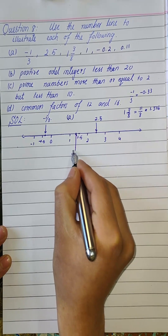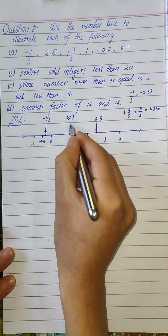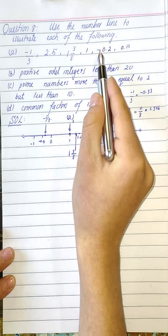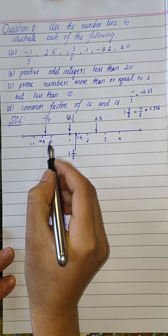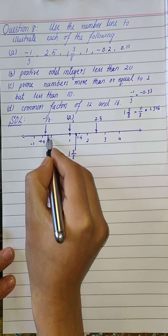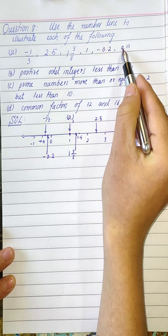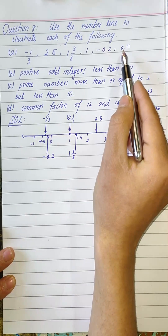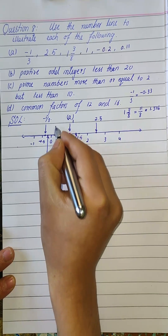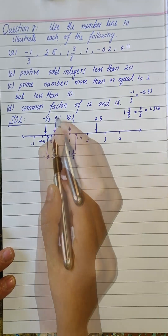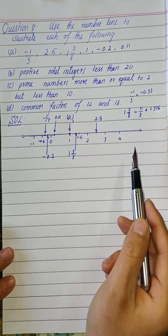1.375 will be around here because 1.5 is the midpoint and 1.375 is close to 1.5, so this point represents 1 and 3 over 8. Then we have 1, so this point is 1. Then we have minus 0.2, which is on the left side of 0 — this point is minus 0.2. Finally, 0.11 is positive so it lies on the right side of 0 — this point is 0.11. We have now illustrated all these points on the number line.